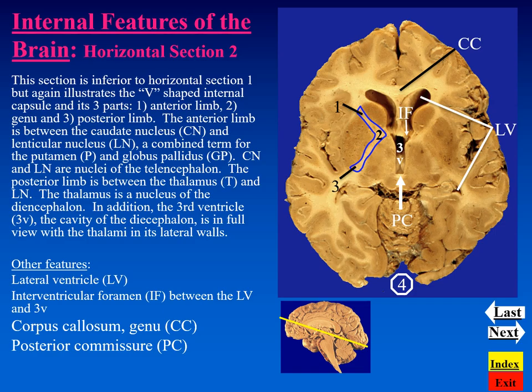We can see that the anterior limb is bordered immediately by the caudate nucleus and laterally by the lenticular nucleus. And now the lenticular nucleus, we can see, is divided into its two subparts: the putamen and globus pallidus. Medial to the posterior limb of the internal capsule, we have the thalamus, and the lenticular nucleus is lateral to it.